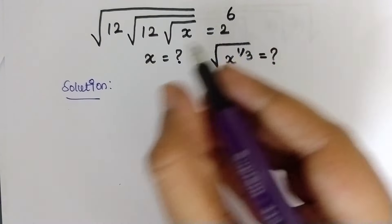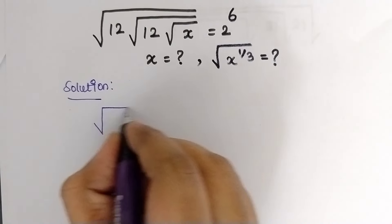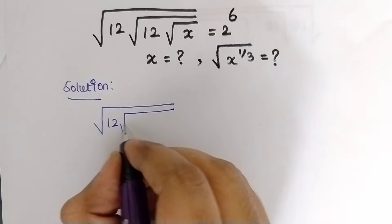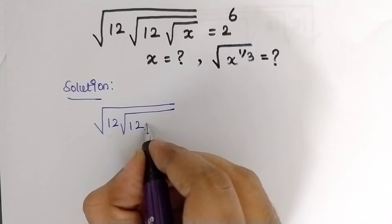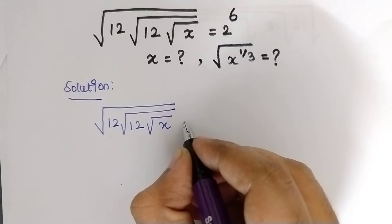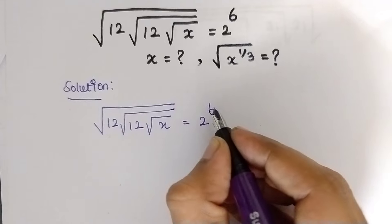The question is: the square root of 12 times the square root of 12 times the square root of x, which is equal to 2 to the power of 3.